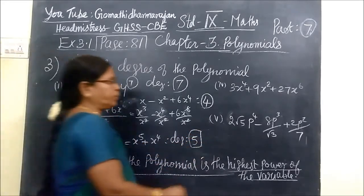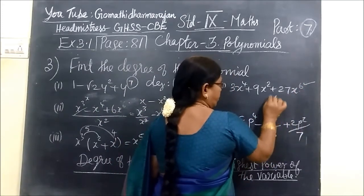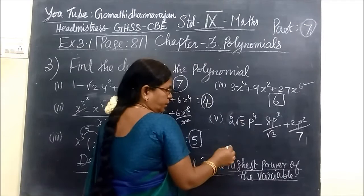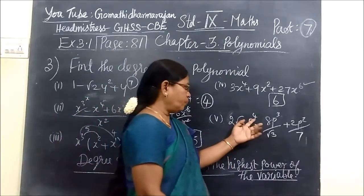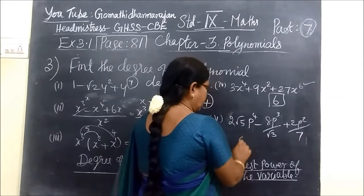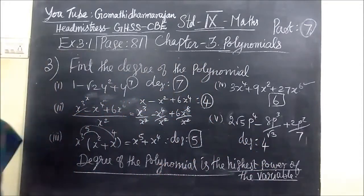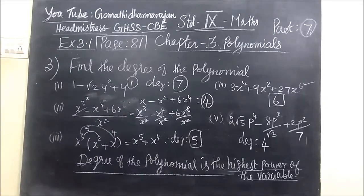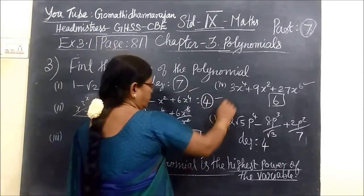Come to the next one. Here the highest power is 6, so the degree of the polynomial is 6. Here the highest power is 4, so the degree of the polynomial is 4. Now we check the answers for the third question: 7, 4, then 5, 6 and 4. So all these answers are correct.